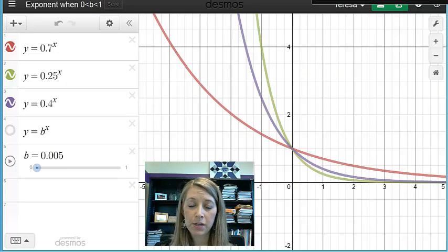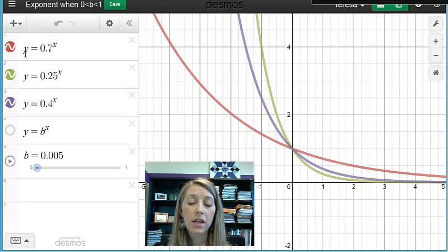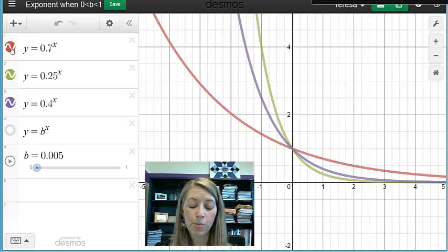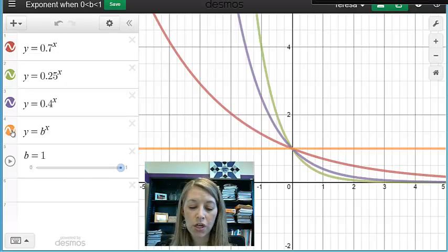So here's an example of an exponential decay function. Notice all of my bases are between 0 and 1. And here you can see if you have a number closer to 1, like this 0.7, then that decays a lot slower. If you have a number closer to 0, like this 0.25, then it decays a lot faster.